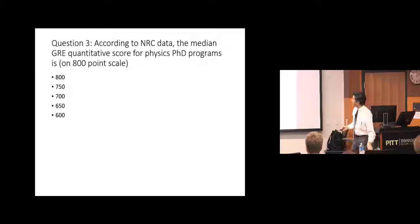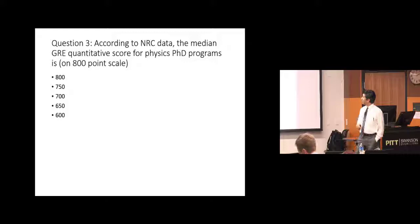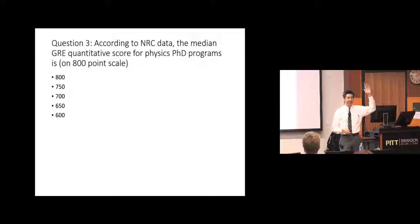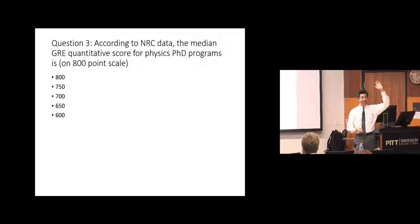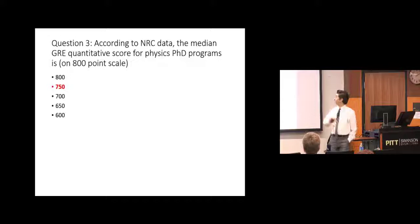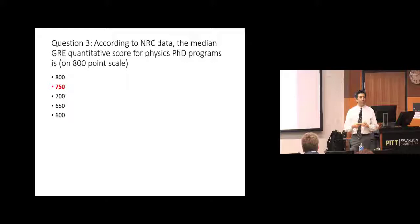So, let's talk about GREs. According to the National Research Council, the median GRE quantitative score for admitted students in physics PhD programs is — on the old 800-point scale — 750. How many people think it's 800? 750? 700? 650? 600? The answer is 750, for admitted students.